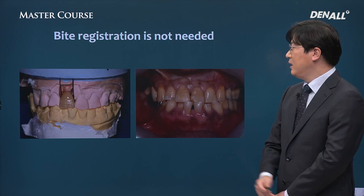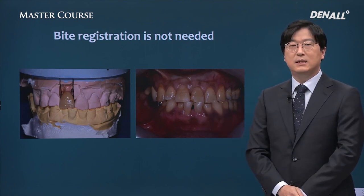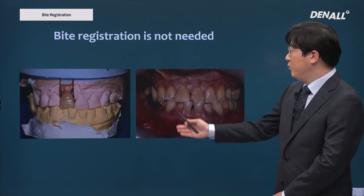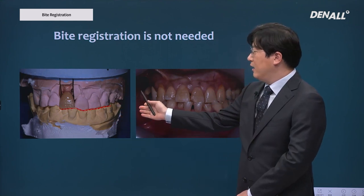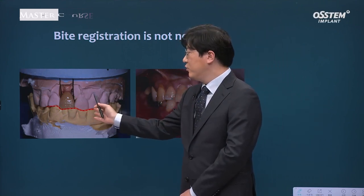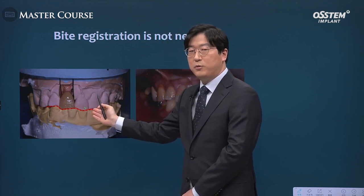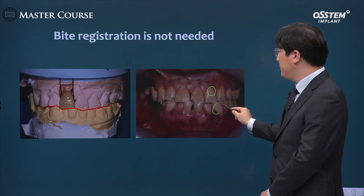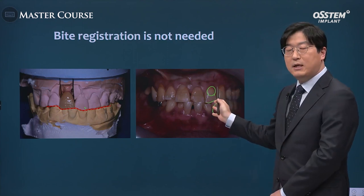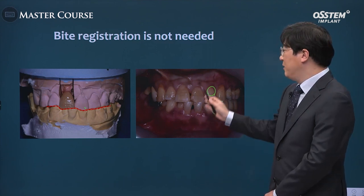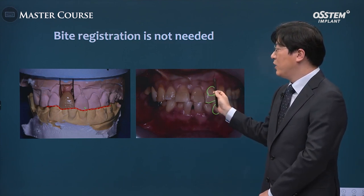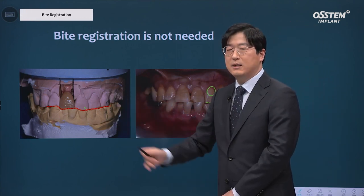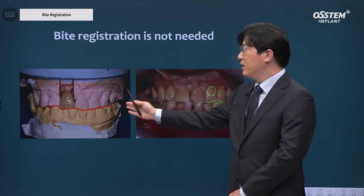If there is no tripod, there are some cases where bite registration is still not absolutely necessary. For example, in the anterior region there is severe wearing or attrition, so there is a wide plane of contact between the upper and lower. Or in cases like numbers 22 and 32 with a partial cross bite — even without tripod contact points, you can see wide contacts. These are exceptions where bite registration is not needed.